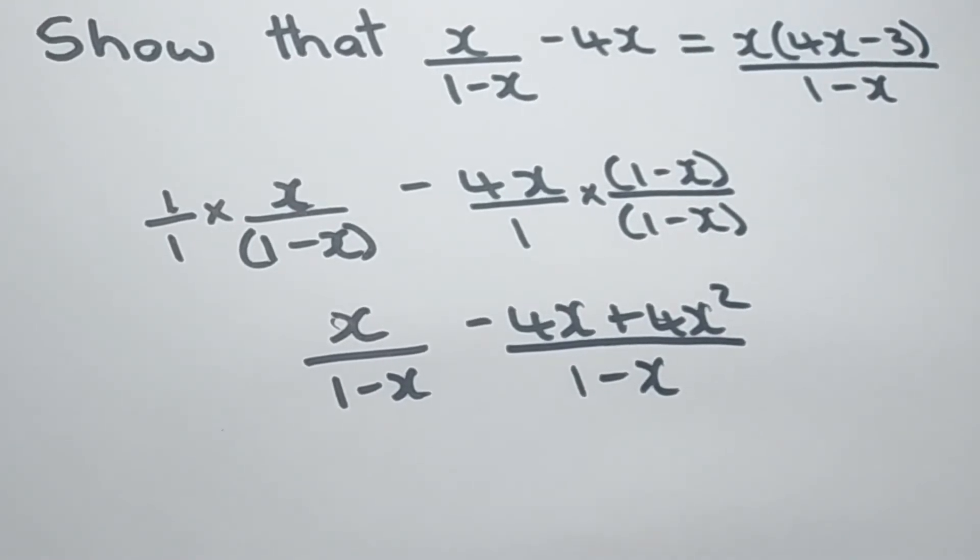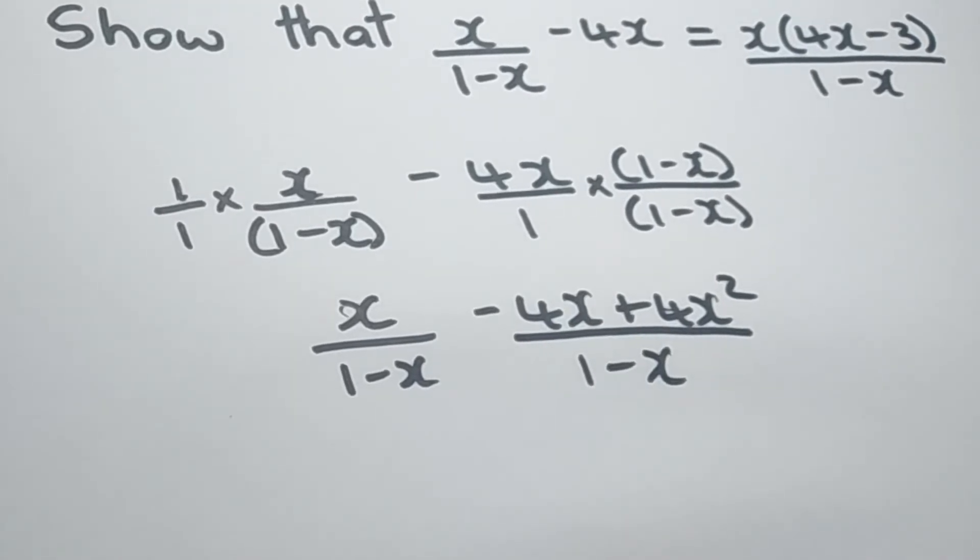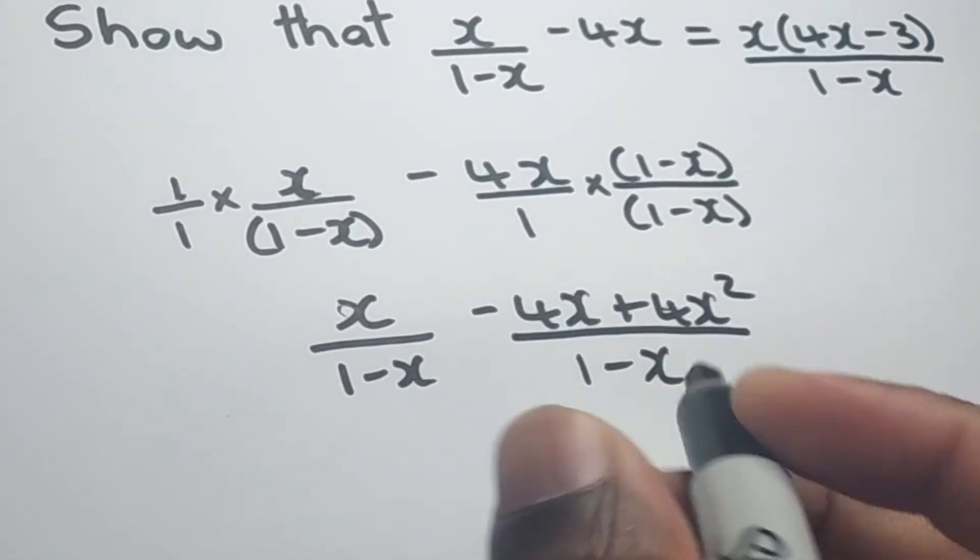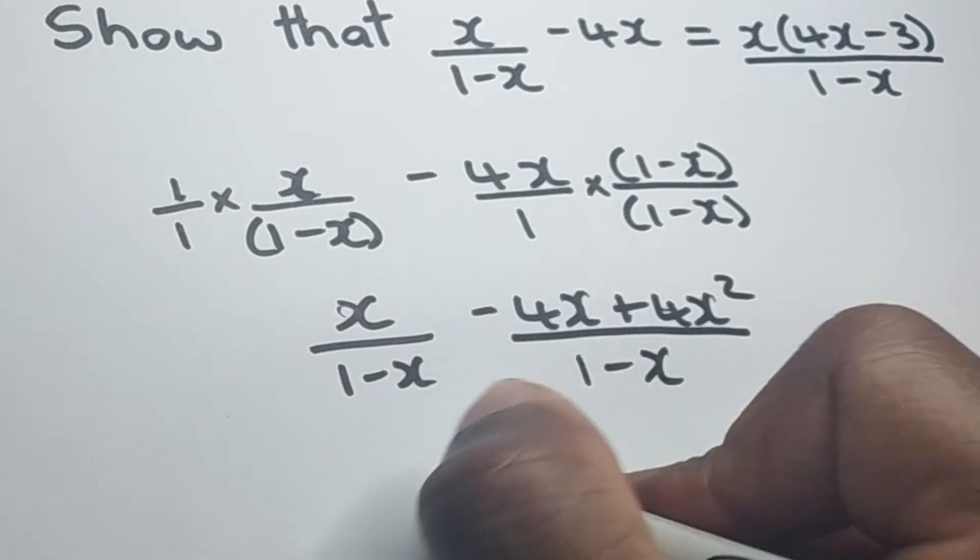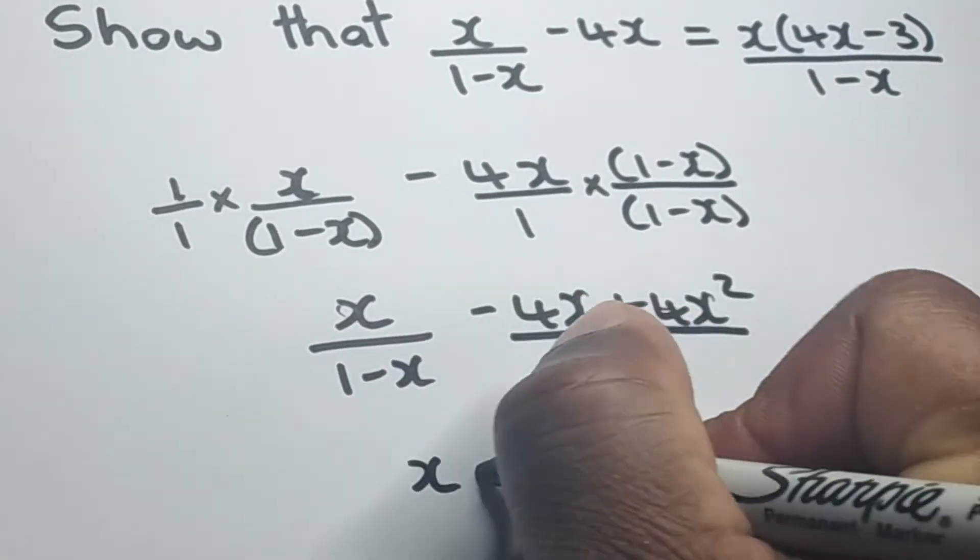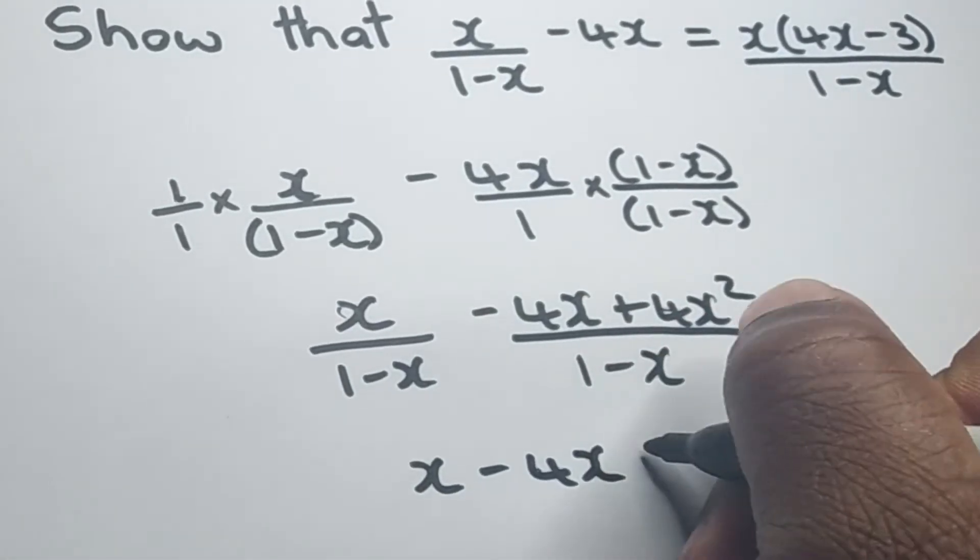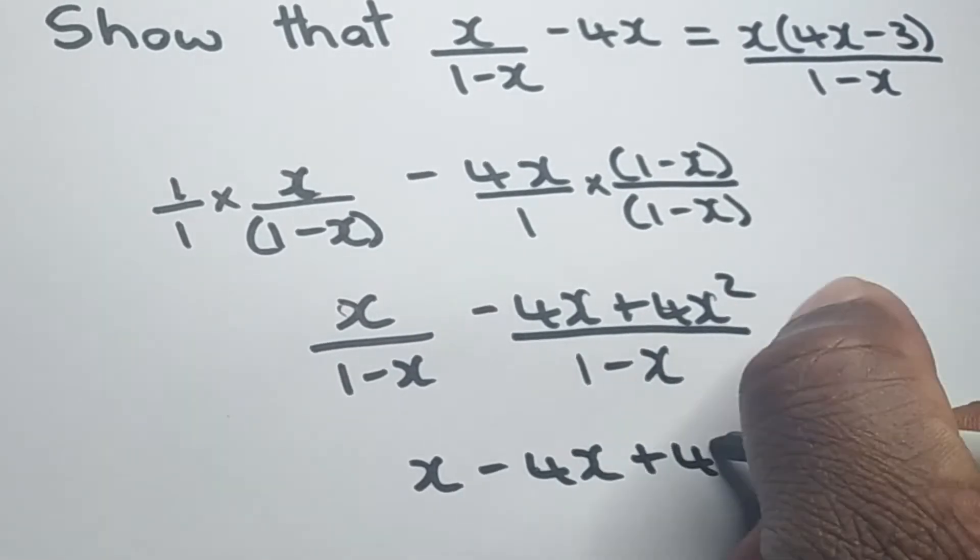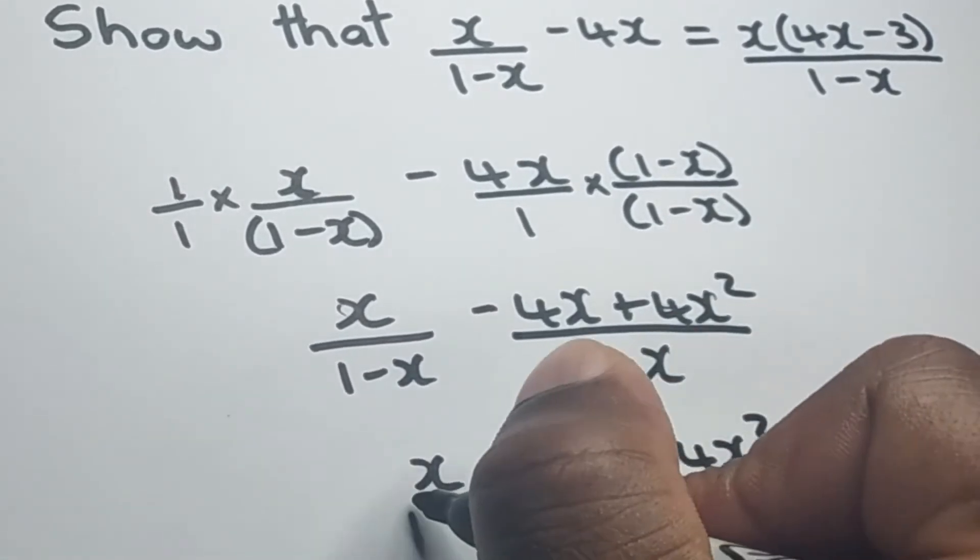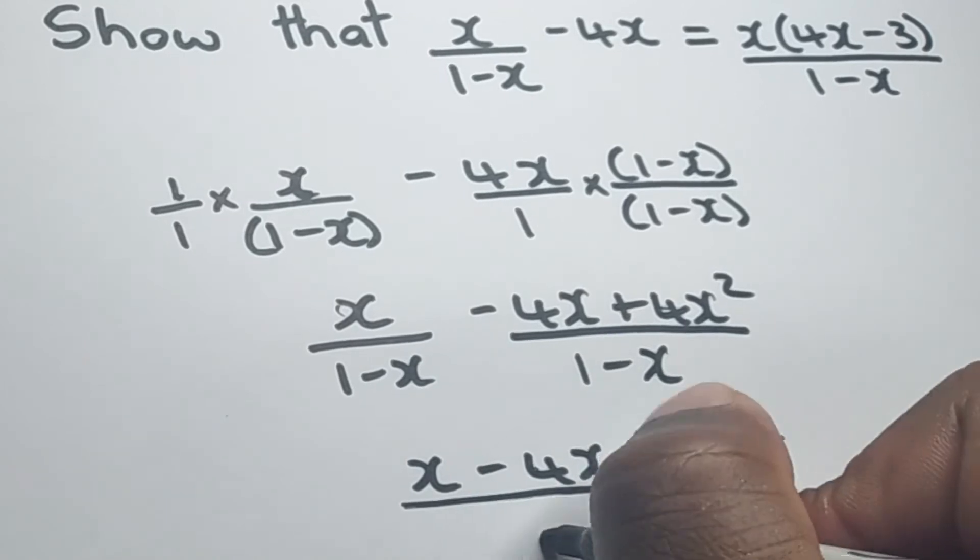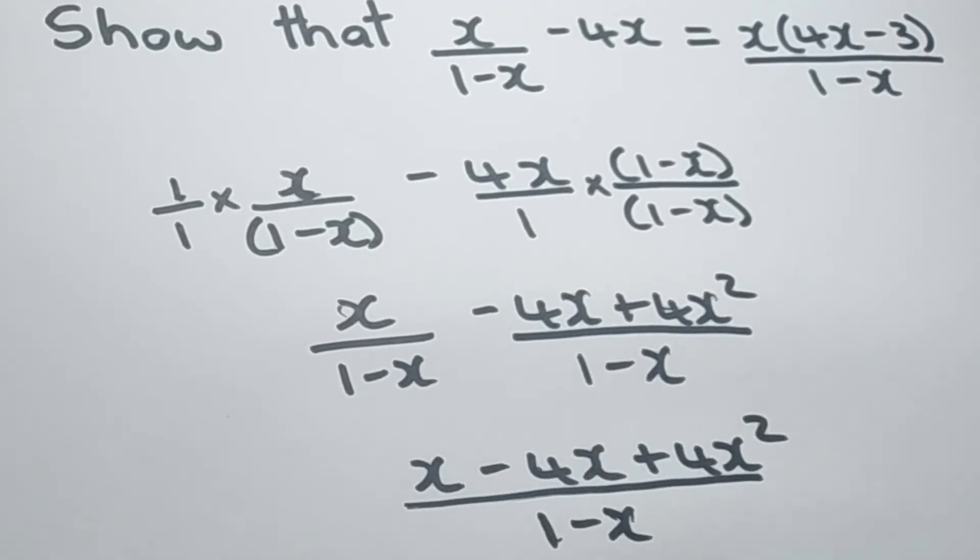And what we can do now, being that we end up with common denominators, we can simply put the numerator over the common denominator. So we can combine both fractions. So we'll end up with x - 4x + 4x² all over 1-x.